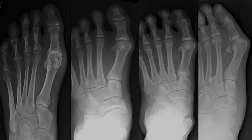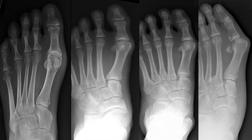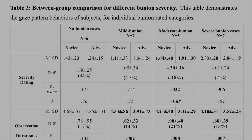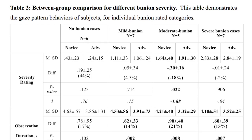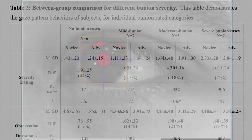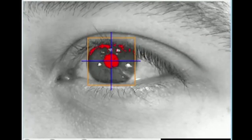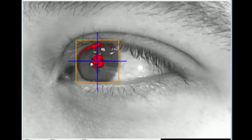Bunion severity ratings were noted to be fairly consistent across both groups. However, moderately severe bunions demonstrated the least consistency among novice subjects. This discrepancy was statistically significant, whereby novice subjects rated the films to be less severe on average. These results are in line with previous studies comparing advanced and novice performers in a variety of fields. This work reinforces the concept that advanced performers have improved accuracy and efficiency, while expanding this theory to foot and ankle surgeons reviewing radiographs.